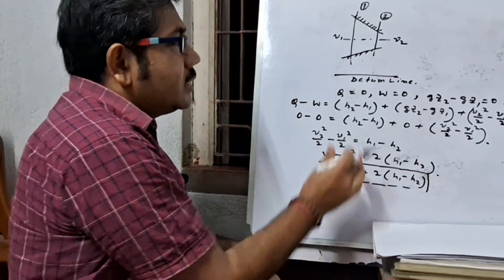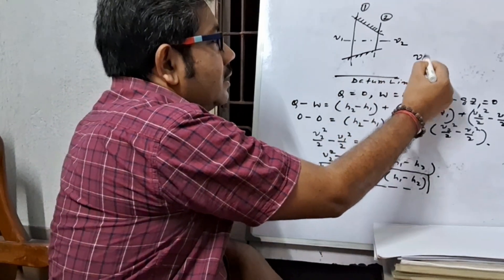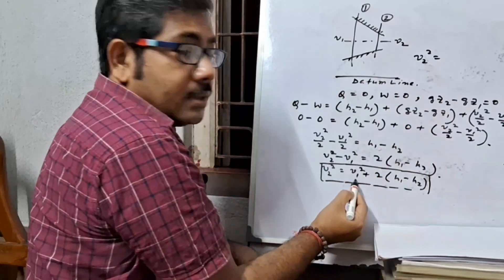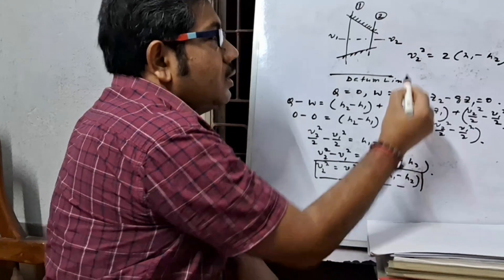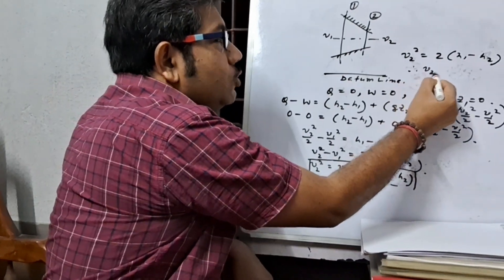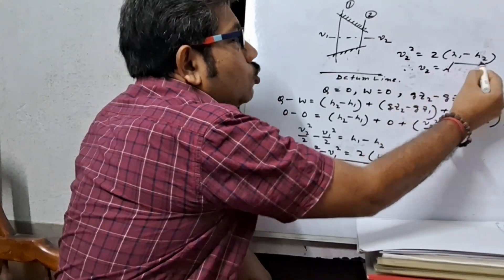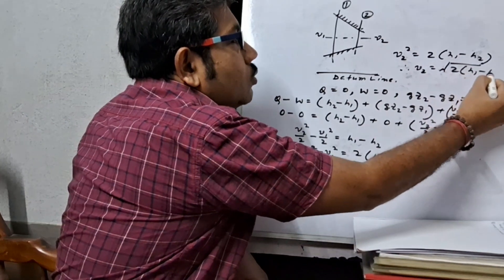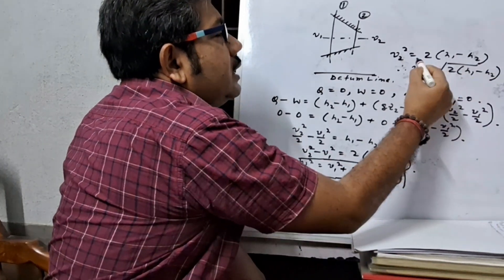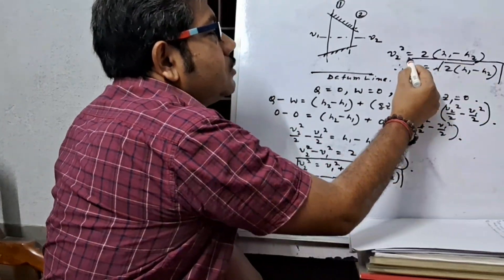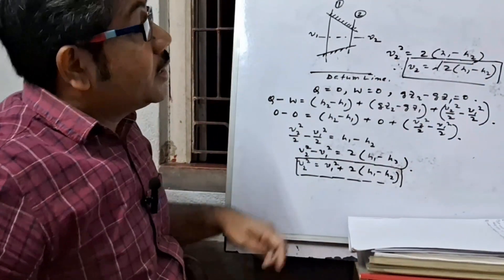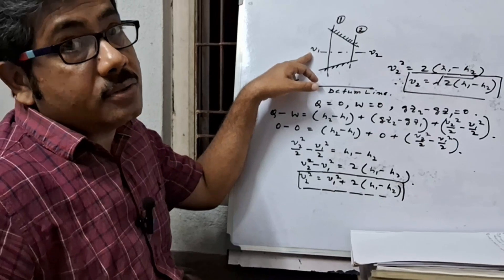This equation can be converted. Here, v2 squared, v1 squared equals 0, that is 2 times h1 minus h2. That is v2 equals square root of 2 times h1 minus h2. This is also another form of steady flow energy equation for nozzle if velocity at approach is 0.